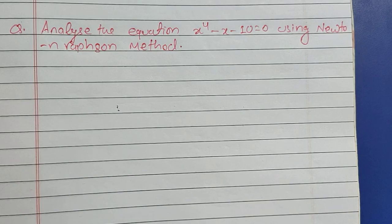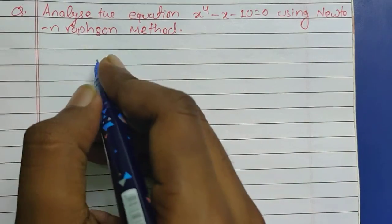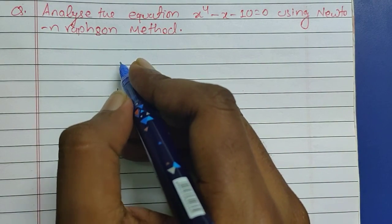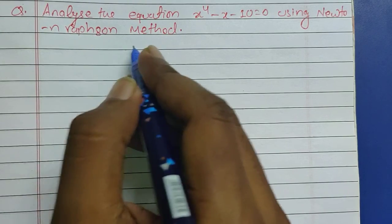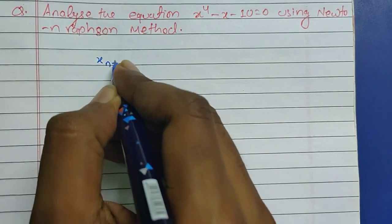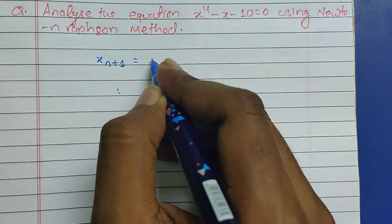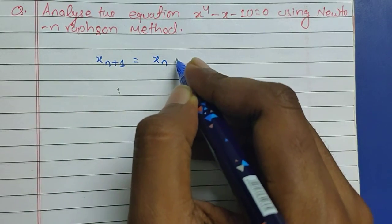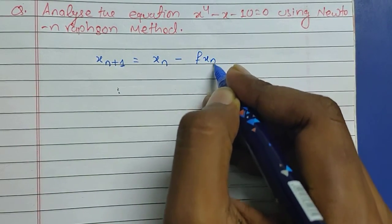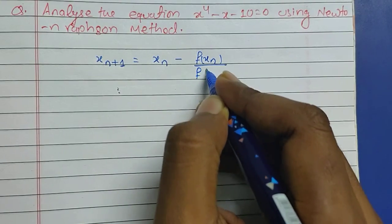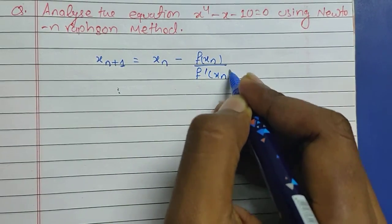Before beginning the solution, I would like to take you through the formula of the Newton-Raphson method, which is given as x_{n+1} = x_n - f(x_n)/f'(x_n).